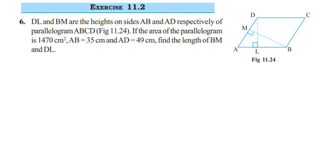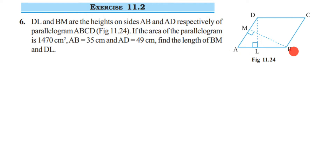Here's question 6 from exercise 11.2 of the area and perimeter chapter for Class 7. DL and BM are the heights on sides AB and AD respectively of parallelogram ABCD.